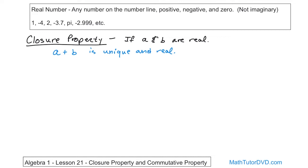Along those lines, you have something similar. If you take that number A and you multiply it by that number B, it is also unique and real. Sometimes you look at these things and you're thinking, 'Well, these are obvious.' What I'm basically saying is if I take the number 1 — that's a real number — and I multiply it times the number 7 — that's a real number — the answer: there's only one answer, and it's also a real number. In other words, you're not going to get an imaginary number back. That's called the closure property.